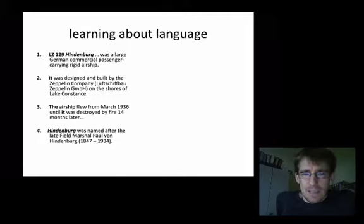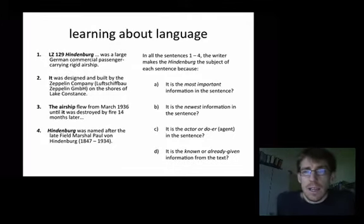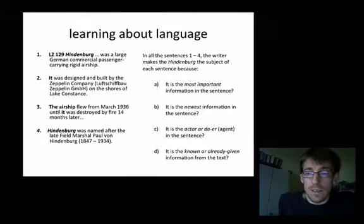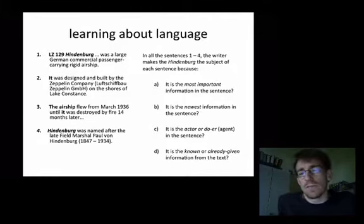Then once we'd established that, I asked them, in all of the sentences, why would you say the writer makes the Hindenburg the subject of each sentence? Is it because it's the most important information in the sentence? Is it because it's the newest information in the sentence? Is it because it's the actor or the doer in the sentence? Or is it because it's in the subject position because it's the known or the already known information in the sentence, in the text? Known or already given, I should say.